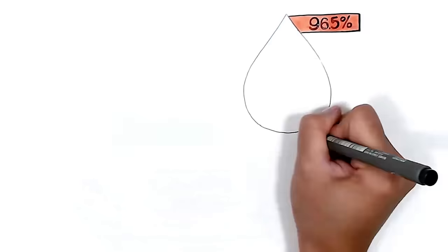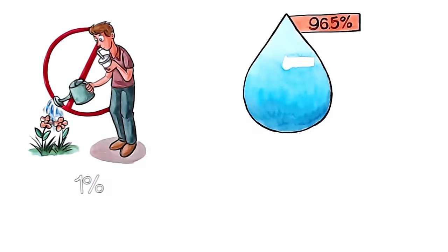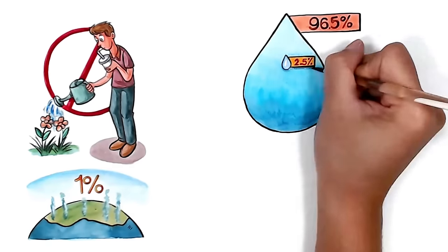Well, almost all the water in the world is salt water, so we can't drink it or grow crops with it. About 1% is in the atmosphere and only 2.5% is fresh water in liquid form.